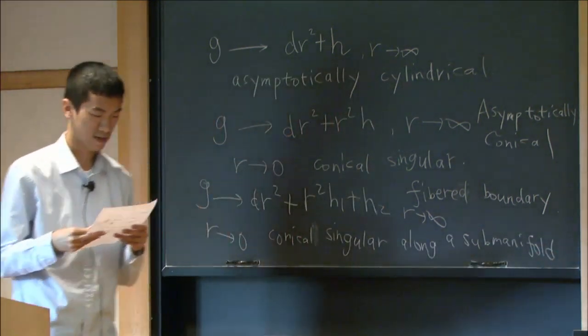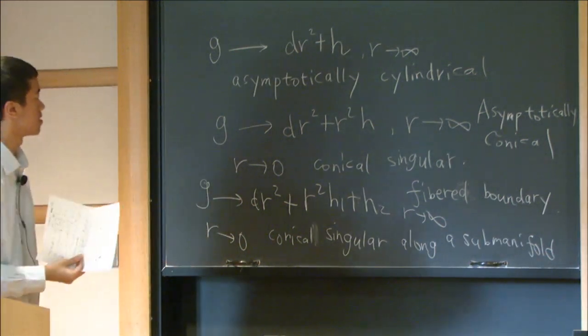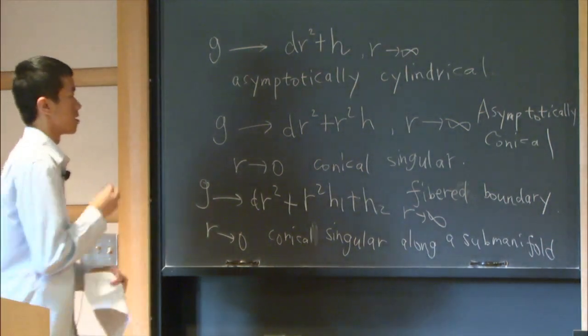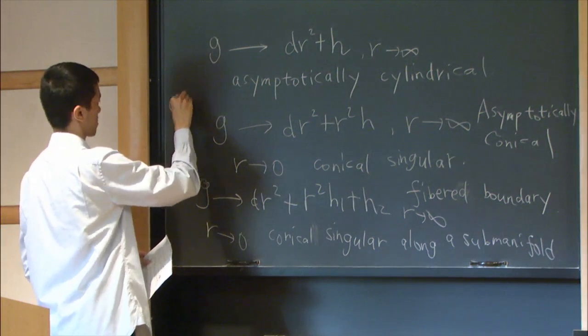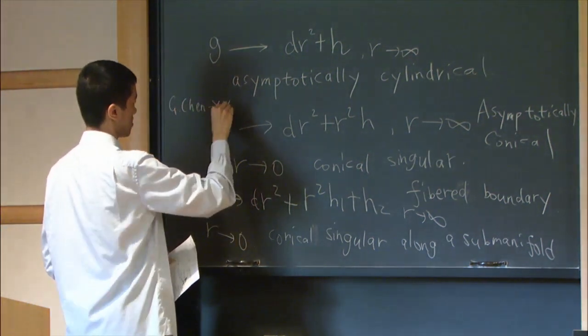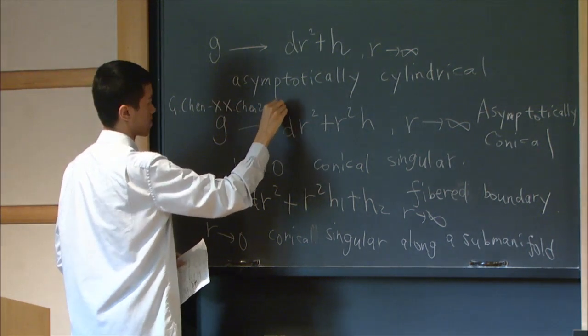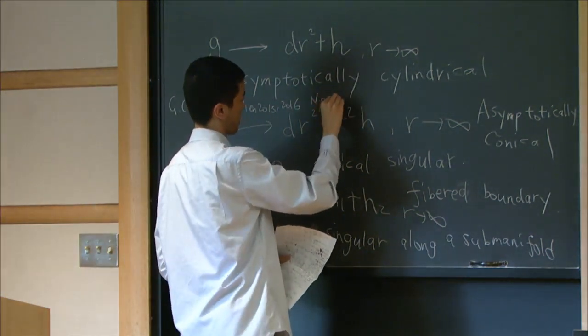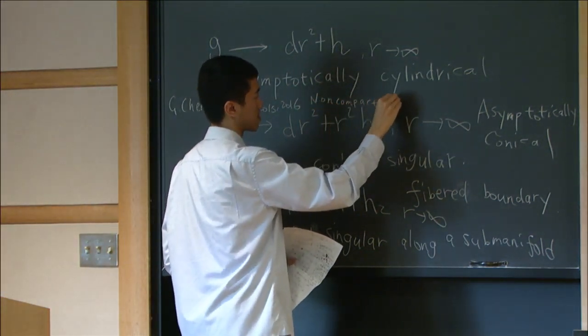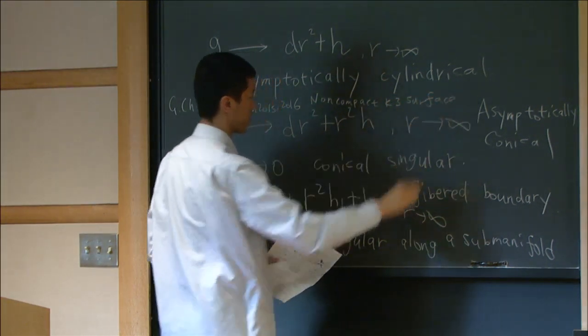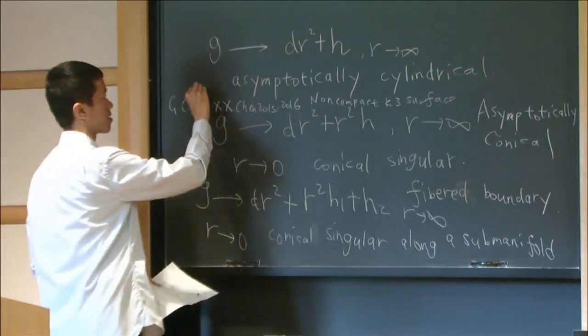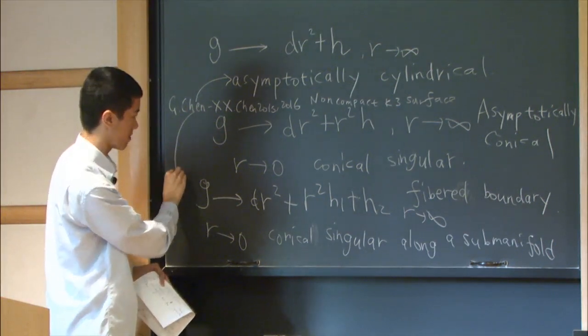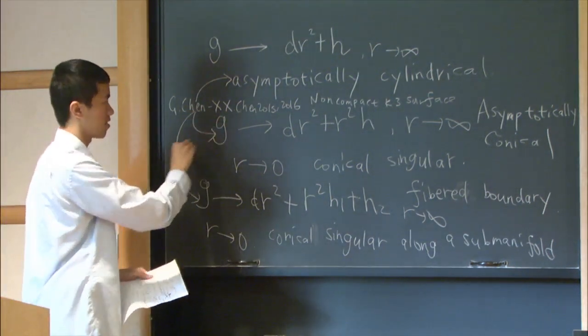Now, I'd like to briefly say what I did before. My first main theorem is, that's my theorem together with Xiu Xiong Chen in 2015 and 2016. We study non-compact version of K3 surface. We provide a classification of it, and all of them belong to the asymptotically cylindrical manifolds, or the fibred boundary manifolds, or asymptotically conical manifolds.